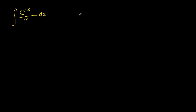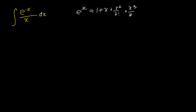We know that the Maclaurin series of e to the power of x, up to and including the x to the power of 4 terms, can be expressed as: 1 plus x plus x squared over 2 factorial plus x cubed over 3 factorial plus x to the power of 4 over 4 factorial.